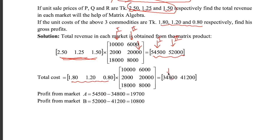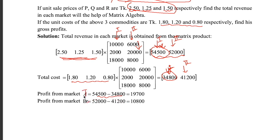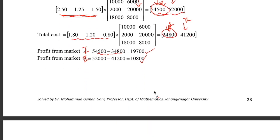The total profit in each market is total revenue minus total cost. In market one that is the revenue amount minus the cost amount. In market two it will be 552,000 minus 41,200, which gives the profit. This is how you can solve this problem.